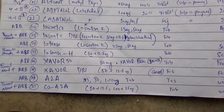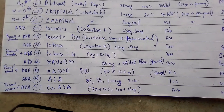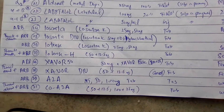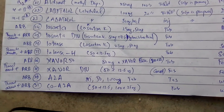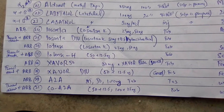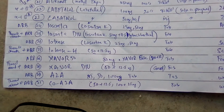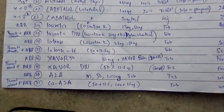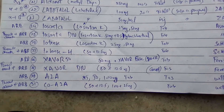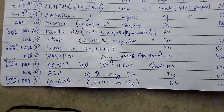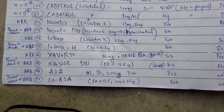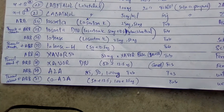Leucetan is an ARB — an angiotensin receptor blocker drug — while hydrochlorothiazide is a thiazide diuretic. A2A is available in 25 mg, 50 mg, and 100 mg strengths containing losartan potassium. Co-A2A contains a combination of losartan potassium and hydrochlorothiazide.